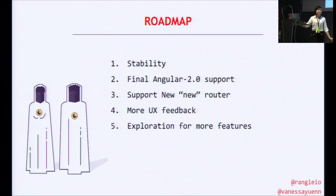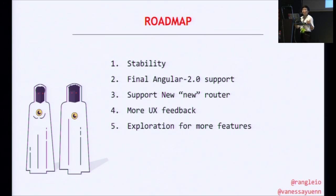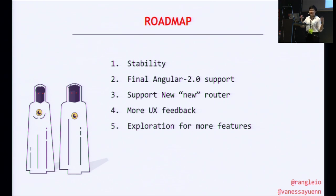That sums up the current state of Augury. A few things about what we have planned for the future. In the short term, we want to improve stability and make it a little bit more bug-free. Right now Augury works really well with small, medium, and large-sized applications, but when it comes to XL and XXL applications, the performance could use a little fine-tuning. We also want to make sure we'll be able to support Angular 2 when the official release finally comes out. And we're currently working to support the new router — router 3, whatever you want to call it.